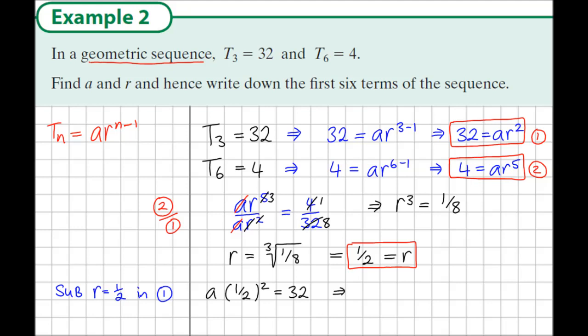Now 1/2 squared is 1/4, so this tells us a multiplied by 1/4 equals 32. If we multiply both sides by 4, this gives us that a = 128. So now we know what the first term a is, it's 128.